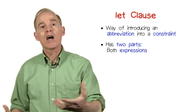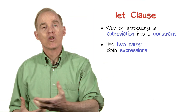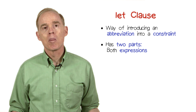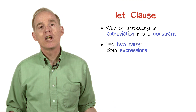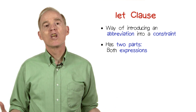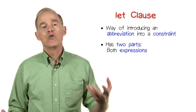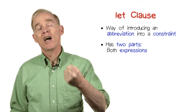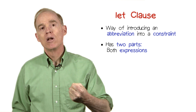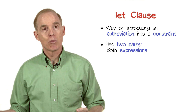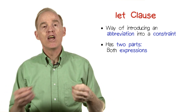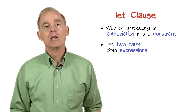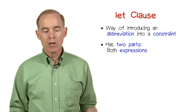Now, you could type it out more than once, but that's extra effort and you might make a mistake. So instead, you could use a let clause to introduce a new identifier that has the value of that expression, and then use that identifier in the subsequent constraint.